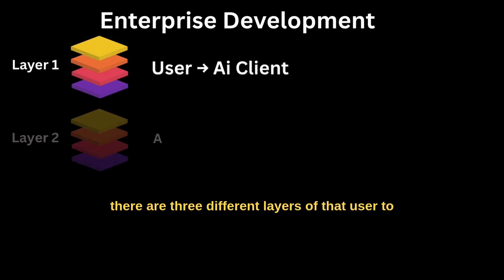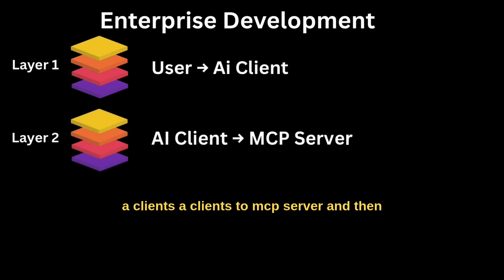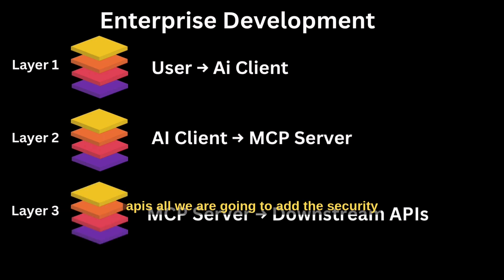There are three different layers. User to AI client, AI client to MCP server, and finally MCP server to downstream APIs. We are going to add security at each stage.